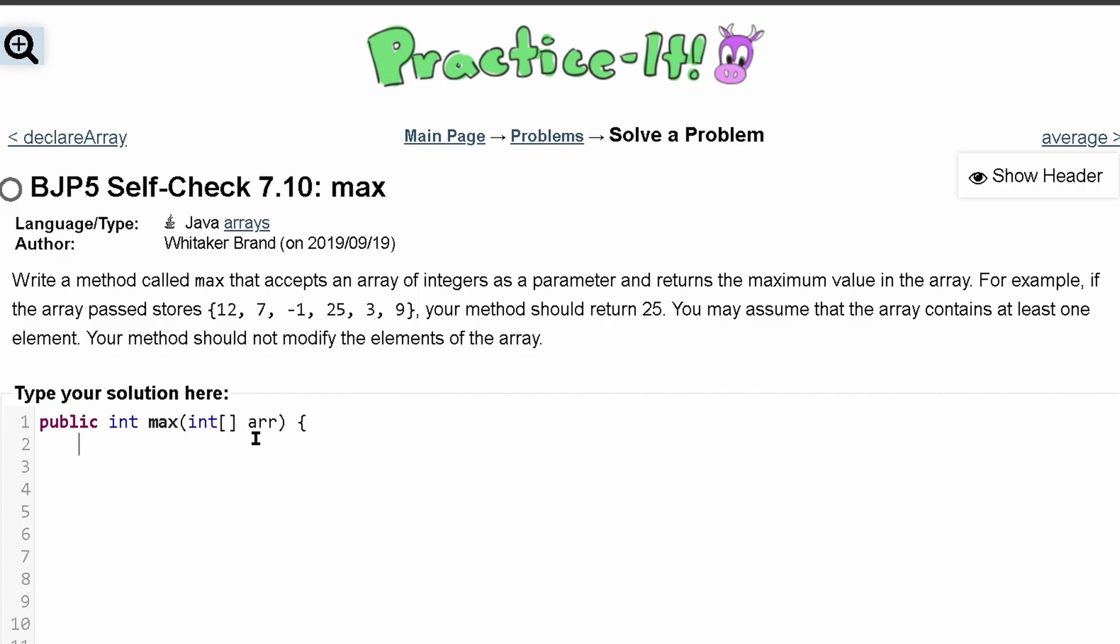Now we have this array and we want to return the largest value. So what we can do is have an int and we'll just call it largest, and we can set it equal to the first index in the array. So we'll do arr at index 0. So it's initially this.